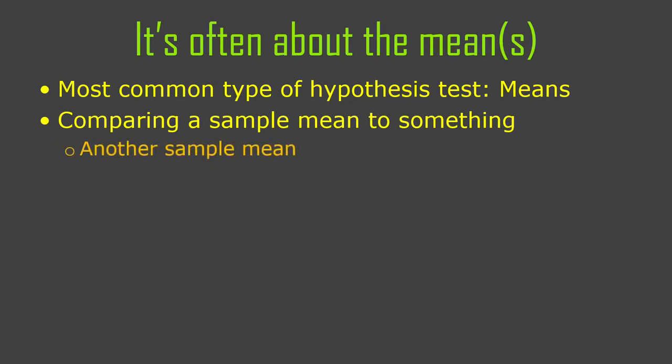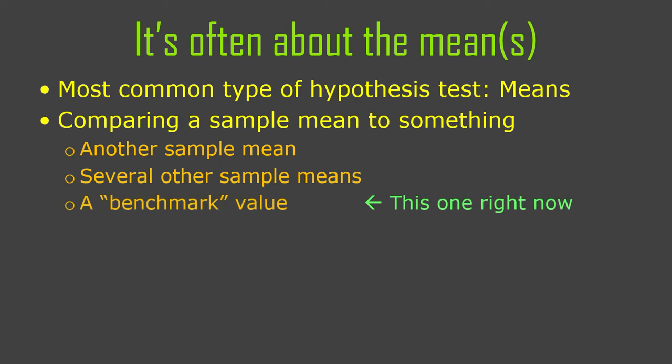There are hypothesis tests for comparing one sample mean to another, or lots of sample means together. But for right now, we're going to compare one sample mean versus a benchmark value — mu zero. This is the mean as implied by the null hypothesis, and somehow we'll work out one value that is mu zero. We're comparing our sample mean to the mean according to the null hypothesis.